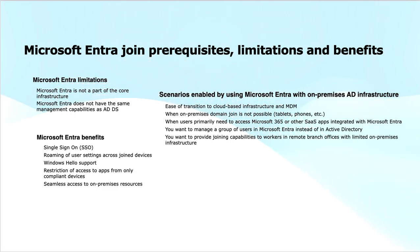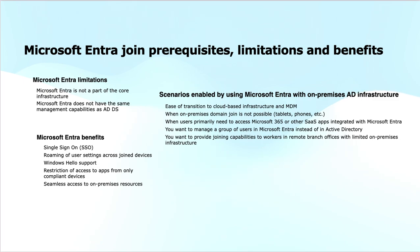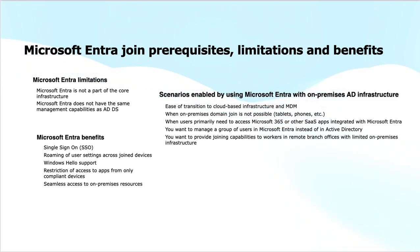Scenarios enabled by using Microsoft Entra with on-premises AD infrastructure include: ease of transition to cloud-based infrastructure and MDM, when on-premises domain join is not possible such as for tablets and phones, when users primarily need to access Microsoft 365 or other SaaS applications integrated with Microsoft Entra, when you want to manage groups of users in Microsoft Entra instead of Active Directory, and when you want to provide joining capabilities to workers in remote branch offices with limited on-premises infrastructure.